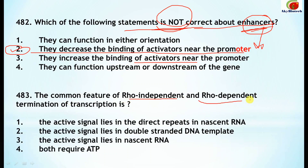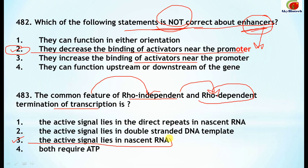Question 483: what is the common feature between rho-independent and rho-dependent termination of transcription? The correct option is number 3: the active signal lies in the nascent RNA. This is the common feature shared between both types of transcription termination.